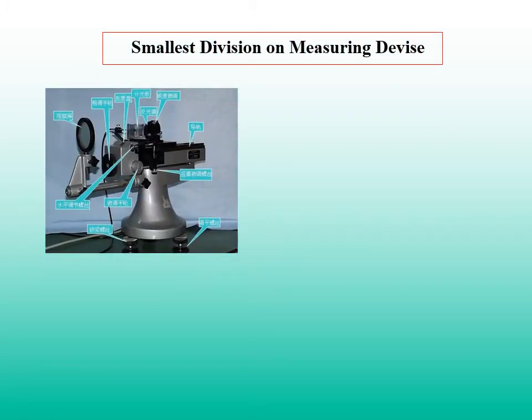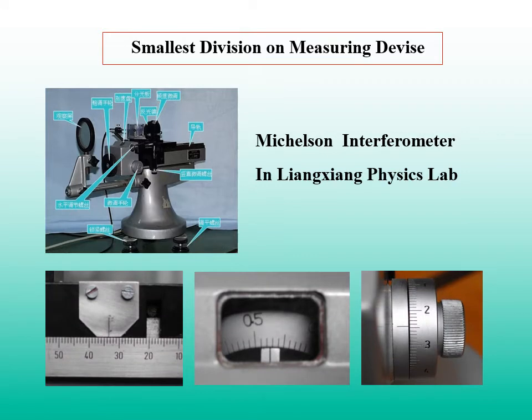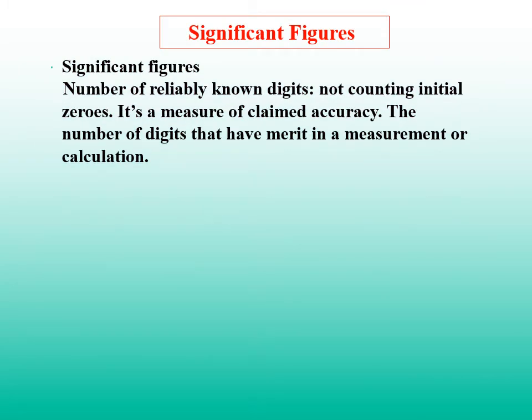This is a Michelson interferometer in Liang's physics lab. The reading showing here is 33.52246 mm, super precise, right? Michelson interferometer is a very precise instrument in length measurement. We say the data showing here has seven significant figures. The number of reliably known digits in a number is called the number of significant figures. It is a measure of claimed accuracy.